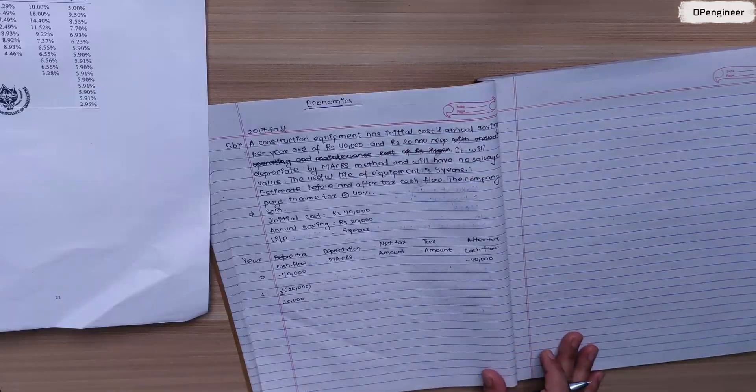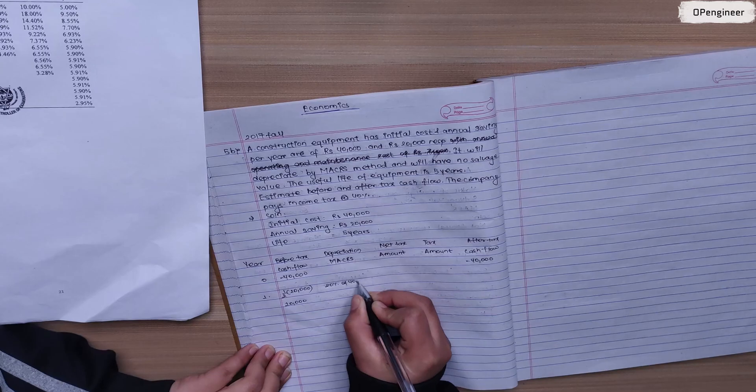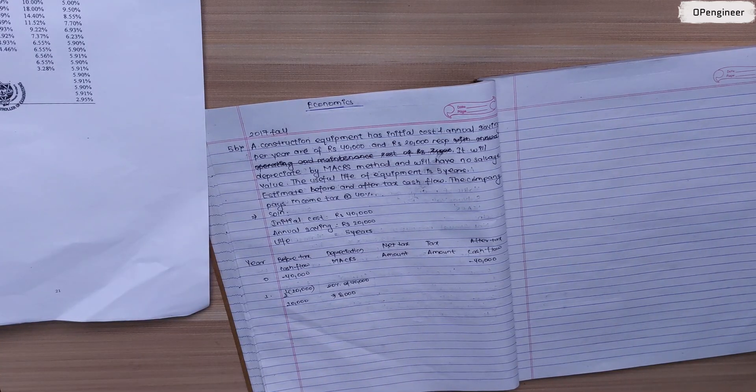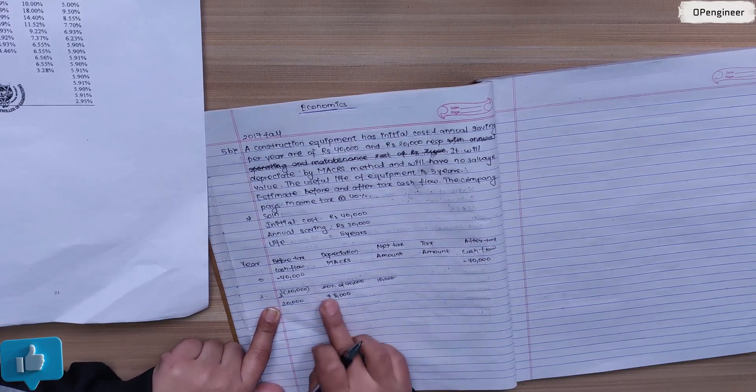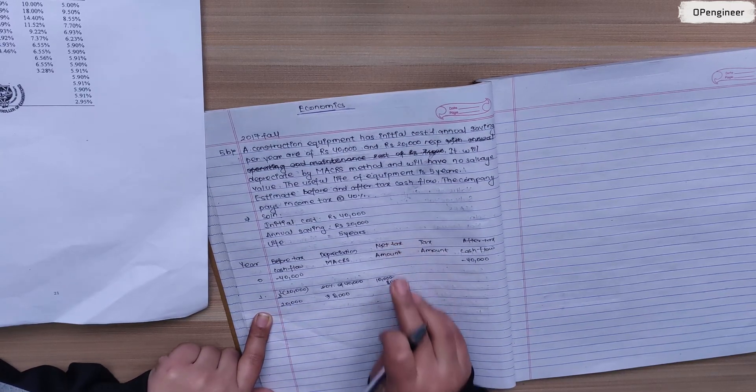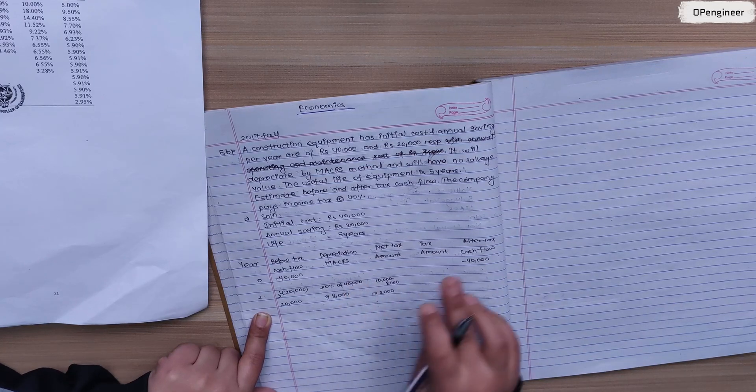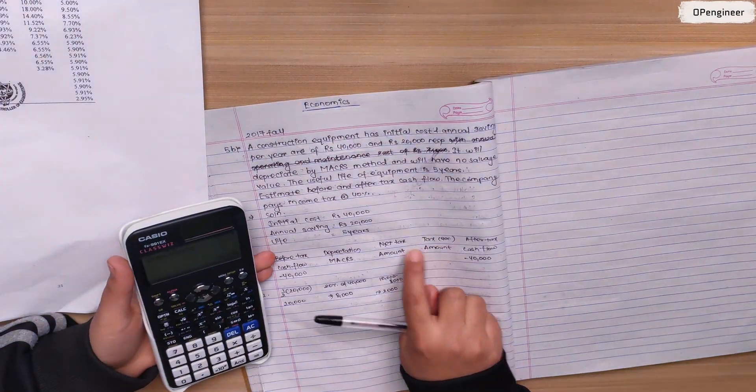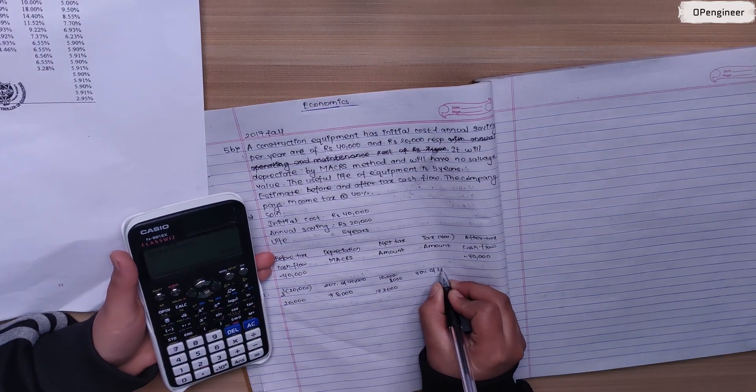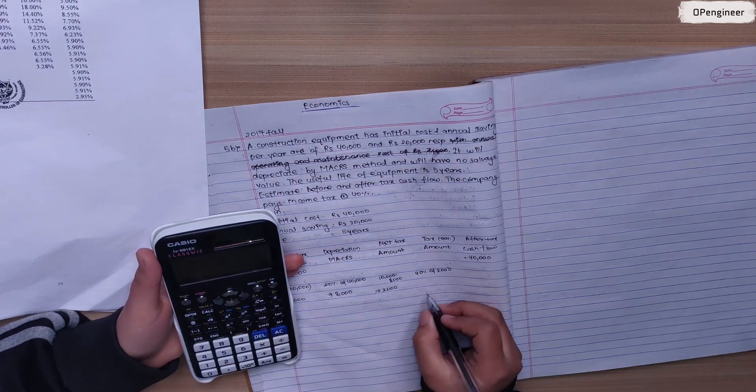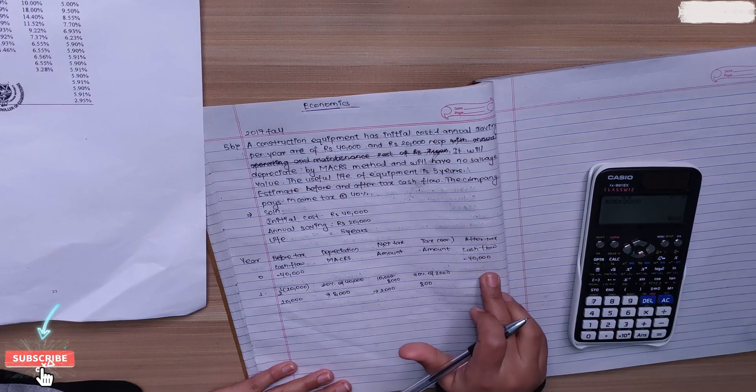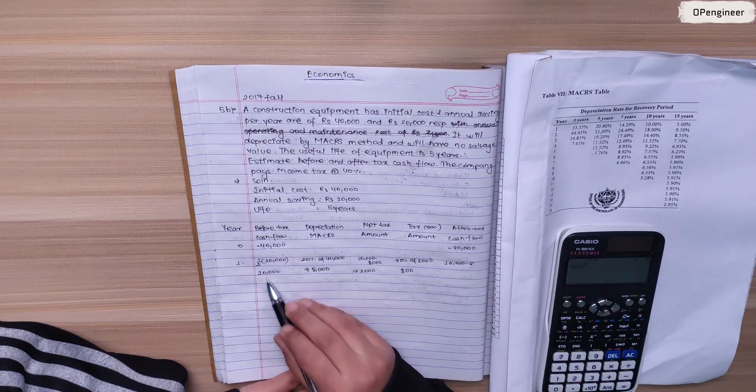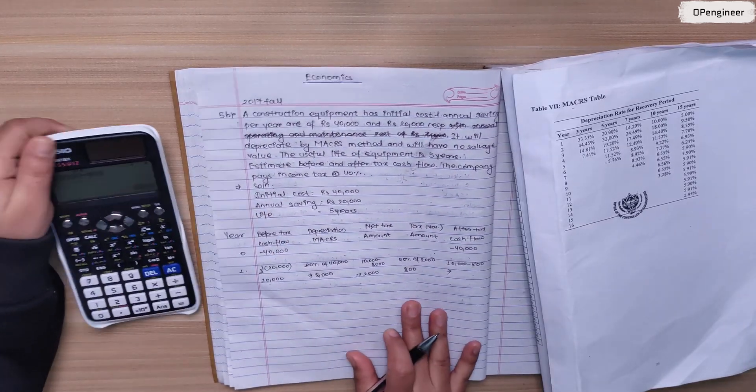In the first year, before tax cash flow from annual savings is 20,000. CRS depreciation for first year of 5-year life is 20%, so 20% of 40,000 is 8,000. Net taxable amount is 20,000 minus 8,000 equals 12,000. Tax amount is 40% of 12,000 which is 4,800 rupees. After tax cash flow is before tax cash flow minus tax amount, so 20,000 minus 4,800 equals 15,200.